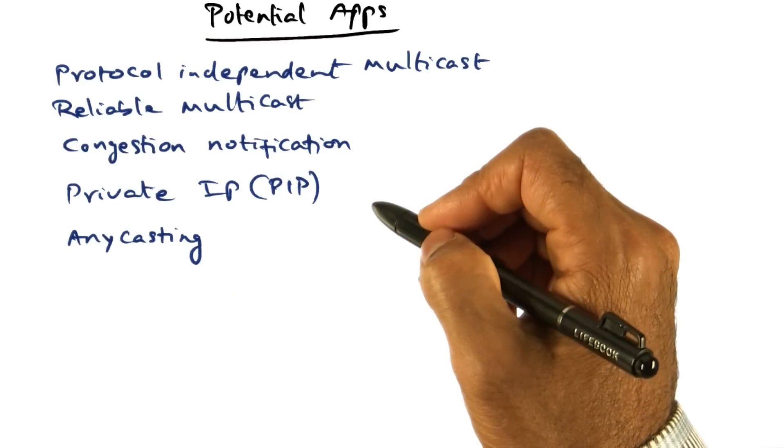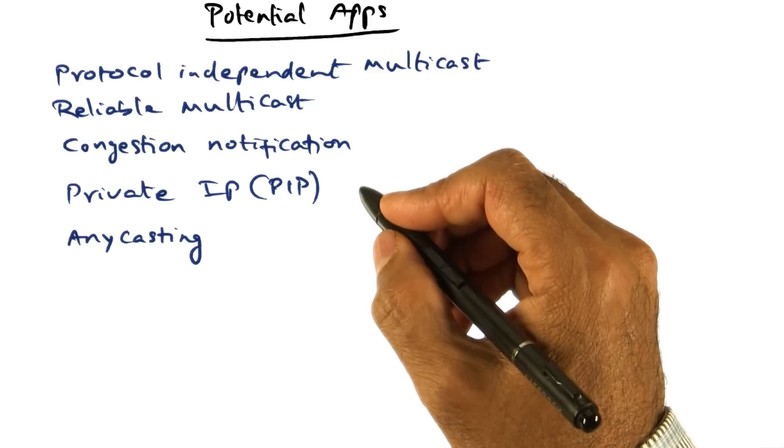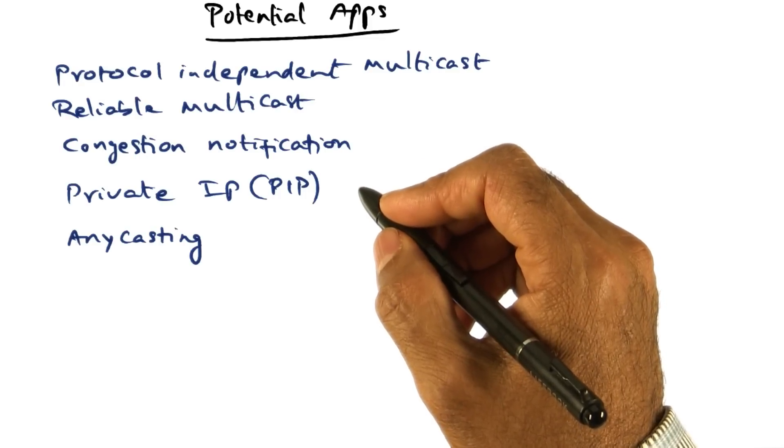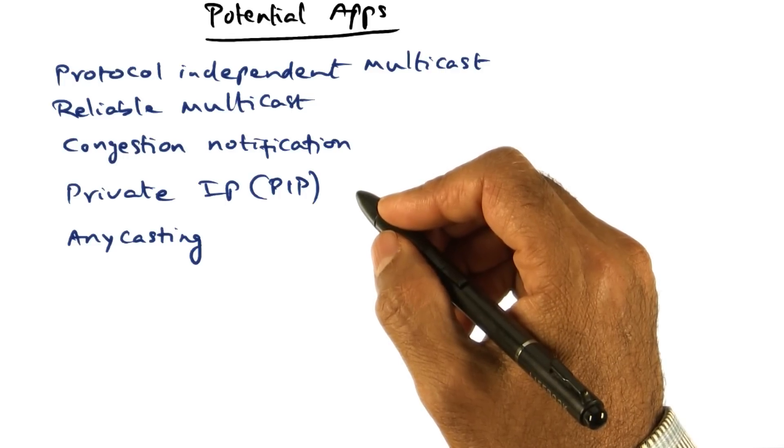As you can see from this list, the kinds of things you want to do using active networks are related to network functionality - not higher level application, but network functionality.